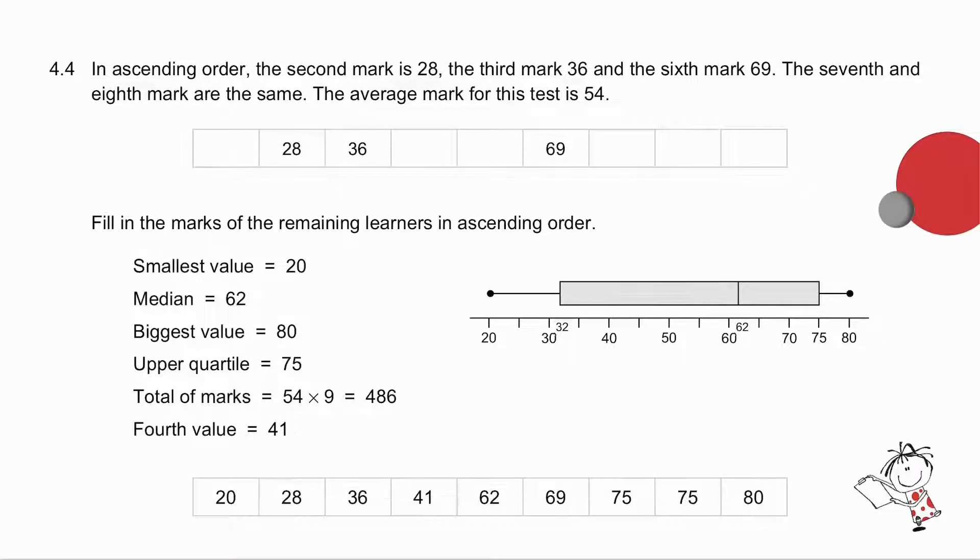The last question says to you, in ascending order, the second mark is 28, the third mark is 36, and the sixth mark is 69. They tell you that the seventh and the eighth marks are the same and the average mark for the test is 54. And we need to fill in the marks of the remaining learners in ascending order. The smallest value is 20. The median is 62. The biggest value is 80. So I now have, they gave me these values, and I've been able to fill in the 20, the 62, and the 80.